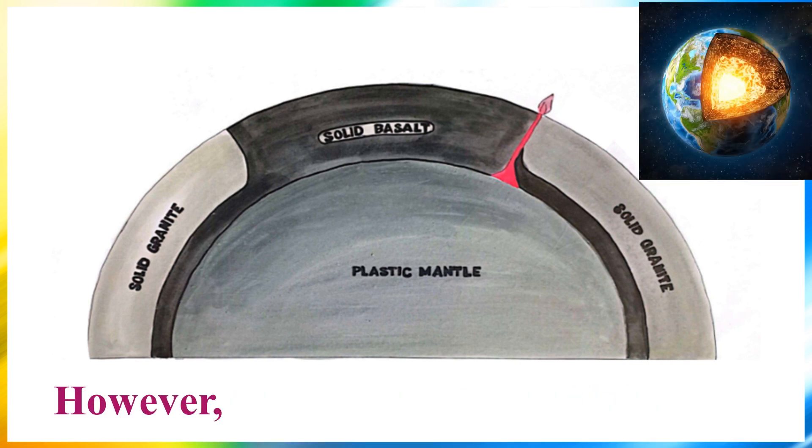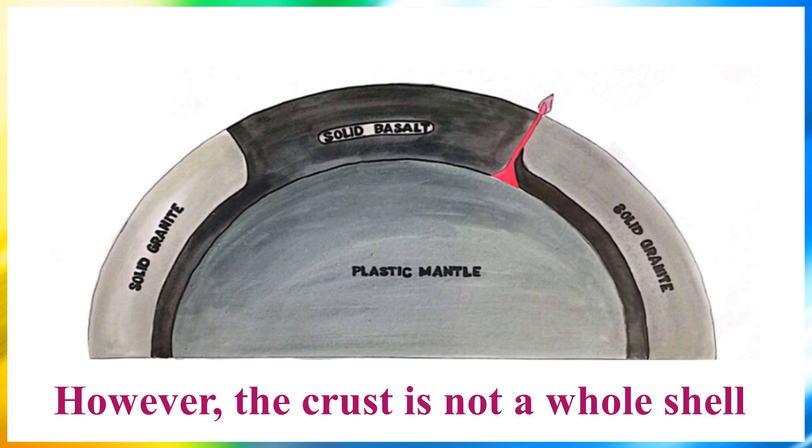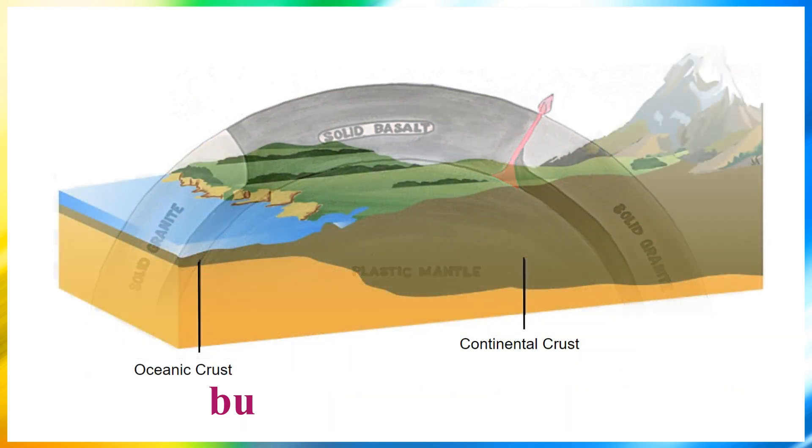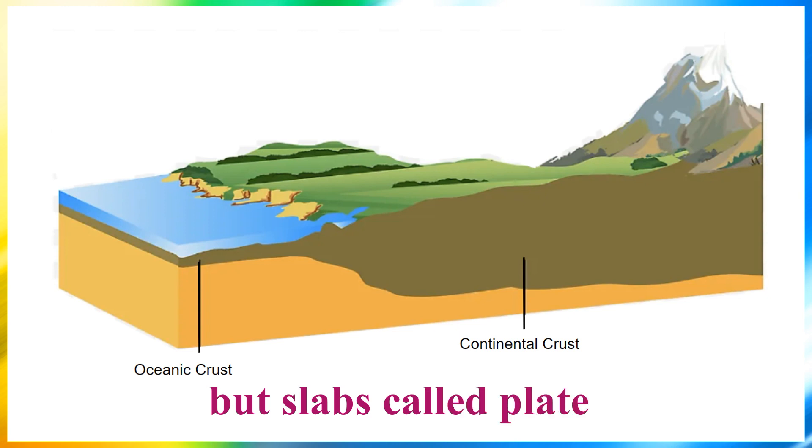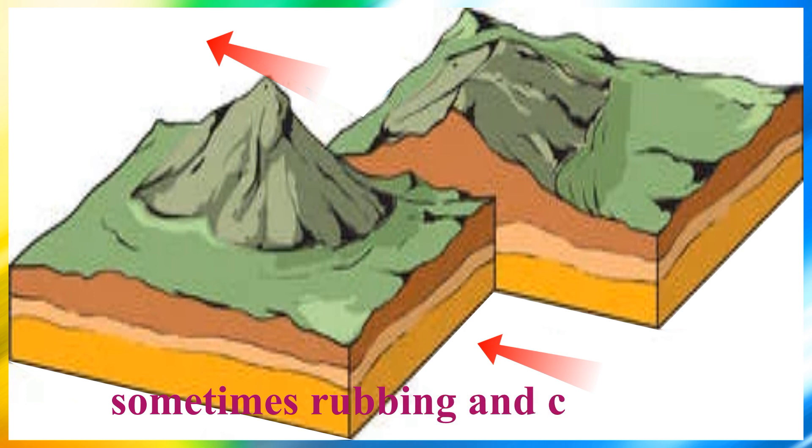However, the crust is not a whole shell covering the mantle, but slabs called plates. They float on top of the mantle, sometimes rubbing and colliding against each other.